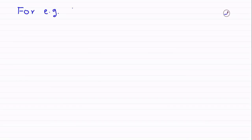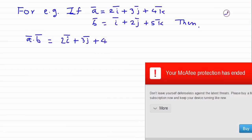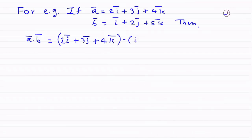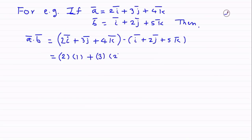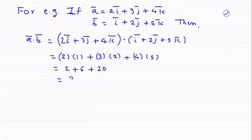For example, if a-bar = 2i + 2j + k and b-bar = i + 3j + 5k, then i·i = 1, so 2×1 = 2; j·j = 1, so 2×3 = 6; k·k = 1, so 1×5 = 5. Therefore the dot product is 2 + 6 + 5 = 13... arriving at a scalar result of 28.